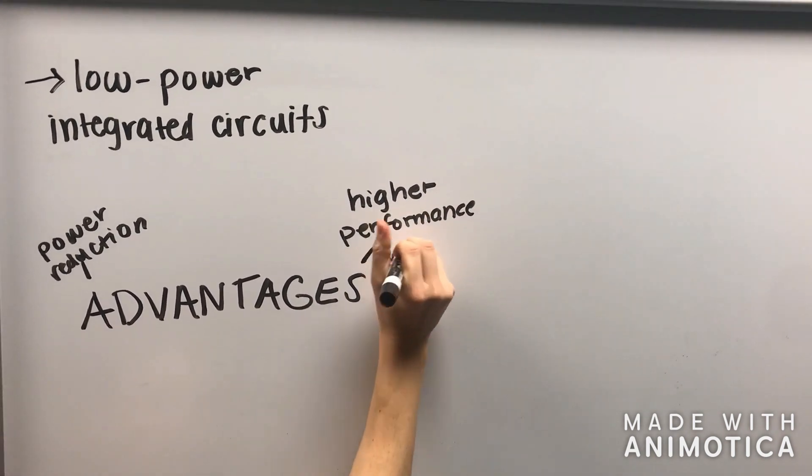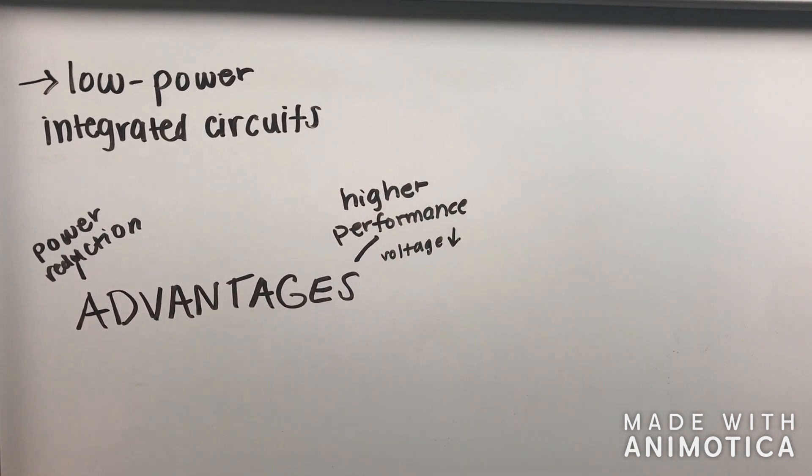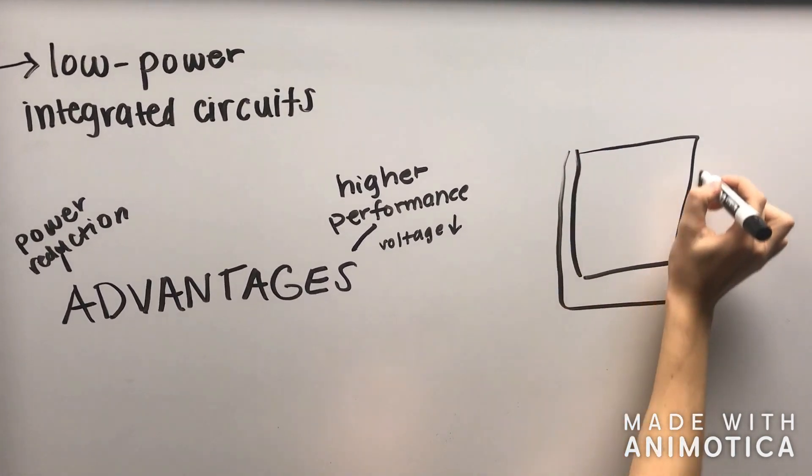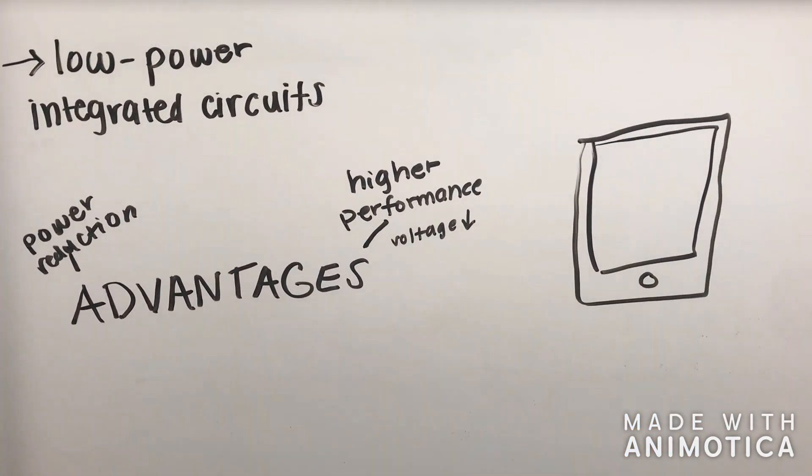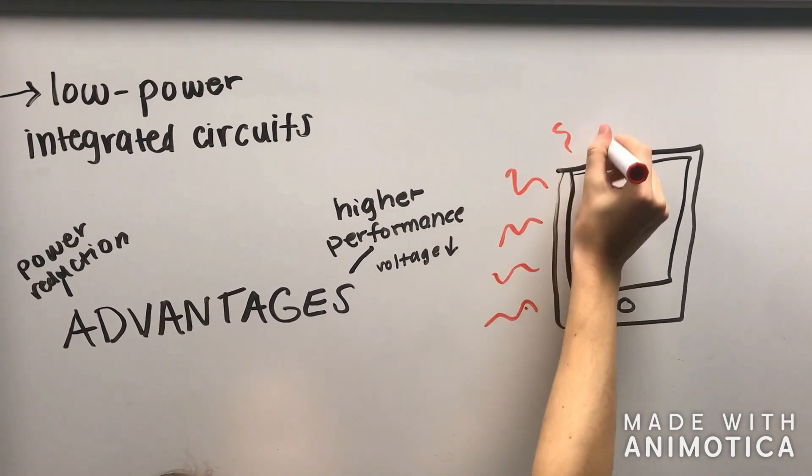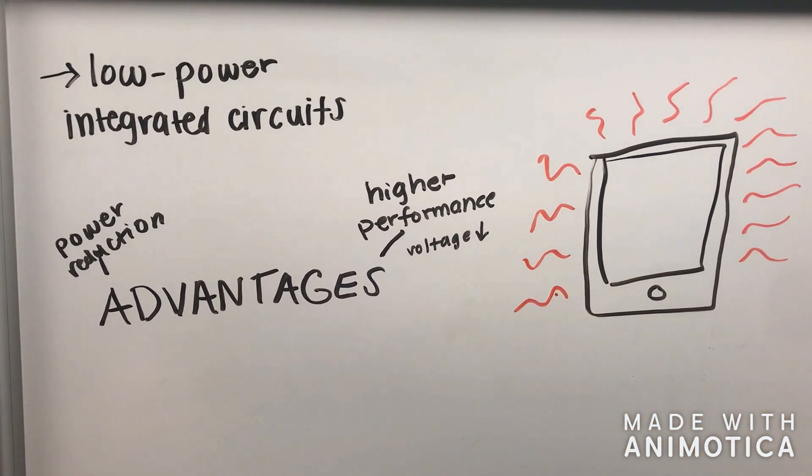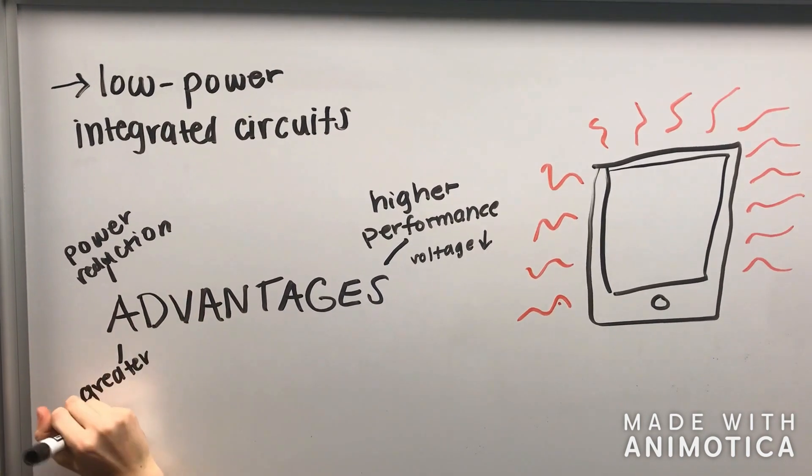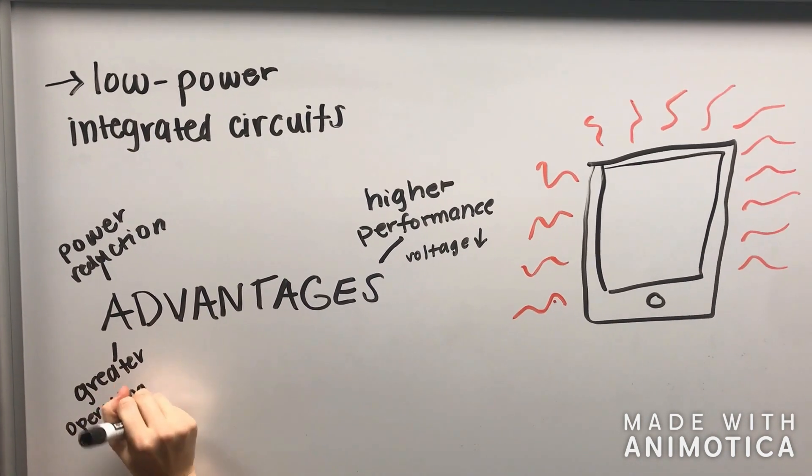They also produce higher-performance products for low-power applications compared to the MOSFET. One application of this is a thin fanless tablet computer that can only dissipate so much power before it is too hot for handheld use. Increasing performance per watt by reducing VDD is essential for increasing total performance.